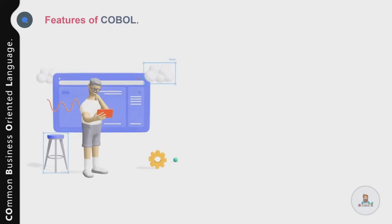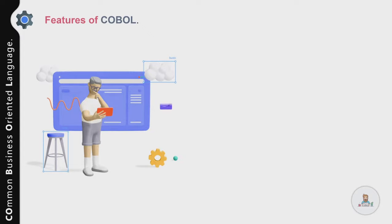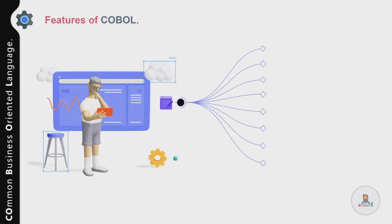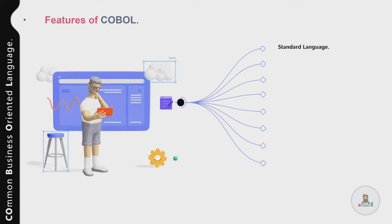Now let's talk about the features of COBOL. Being an old programming language, COBOL is still holding its ground due to its features. The first important feature is that COBOL is a standard language — COBOL compilers are made available by different third-party vendors on almost all types of computers and computing platforms, and all these compiler manufacturers adhere to the norms set by ANSI.